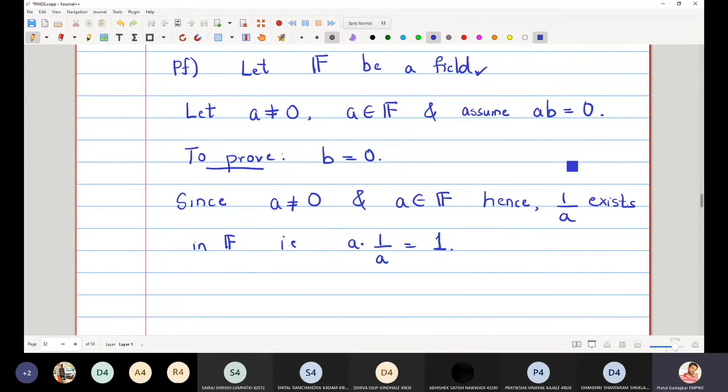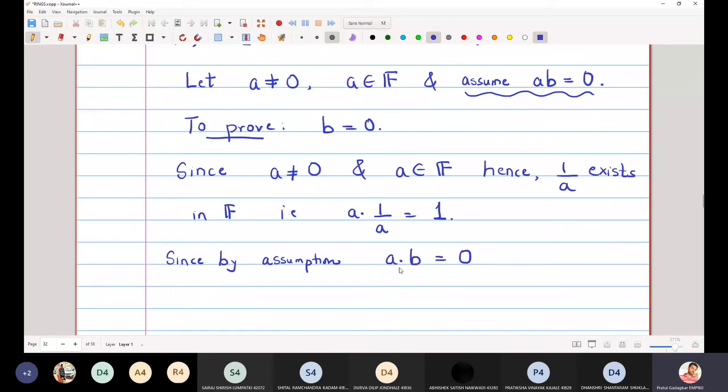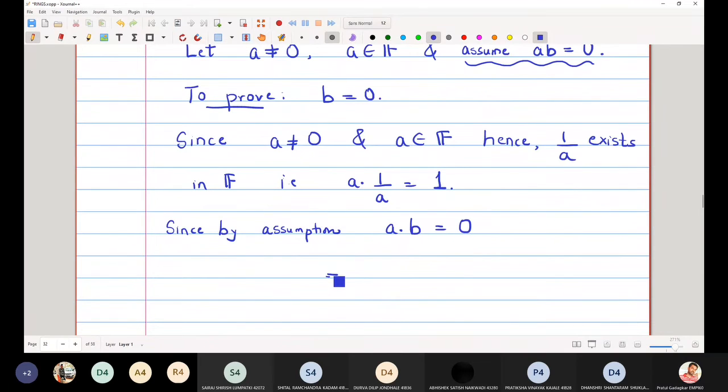Now I will start with something which is assumed. Since by assumption A into B is equal to 0, this implies 1 upon A into A into B is equal to 1 upon A into 0.